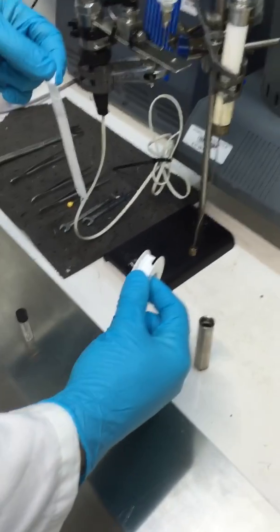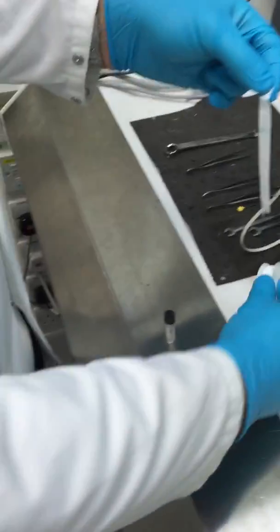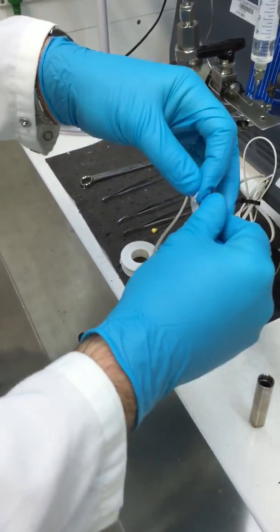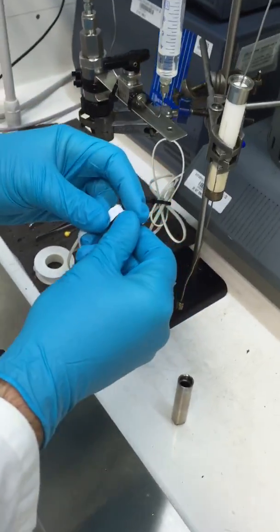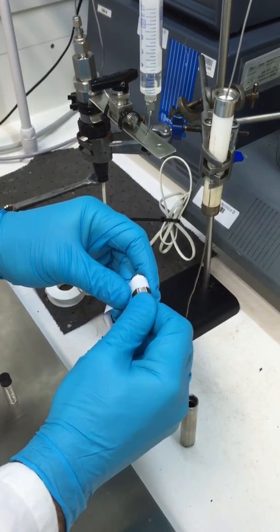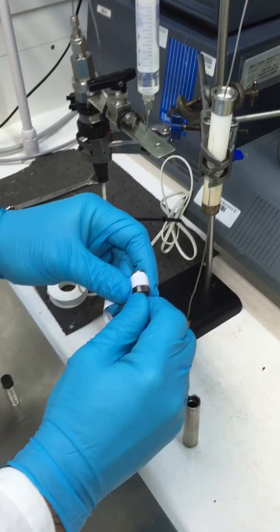It's a demonstration of how we set up a C80. We wrap the nut in Teflon tape, and this ensures a good seal so we don't get any leakage from the cell test while it's running.